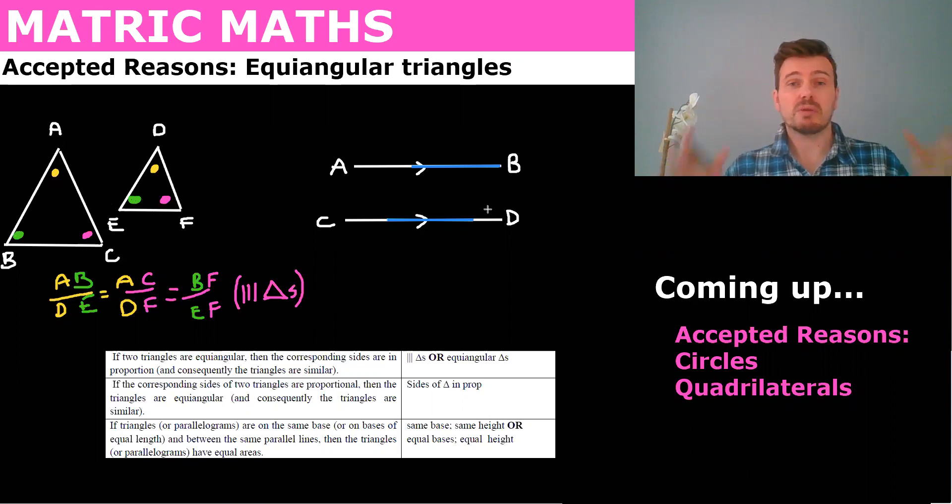So what can we say? Well, we can say from that theorem that we did that AB, so yellow pink, yellow green, AB over DE, the yellow green is proportional to, and then we say AC over DF and BC over EF.